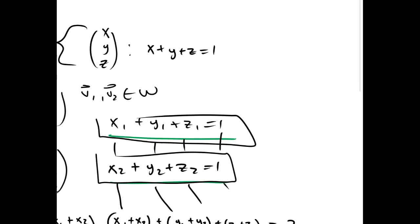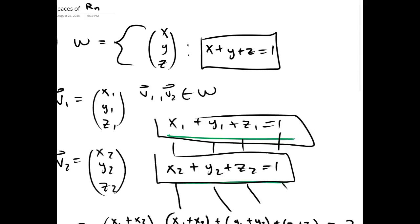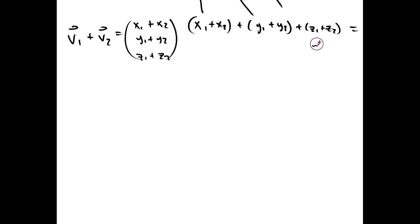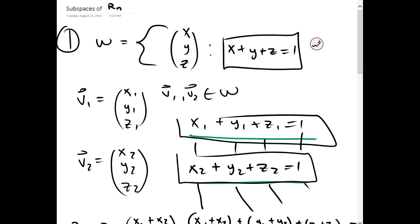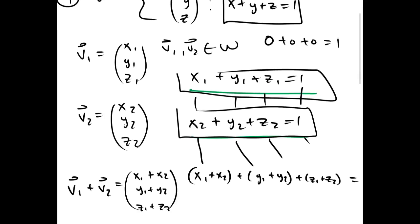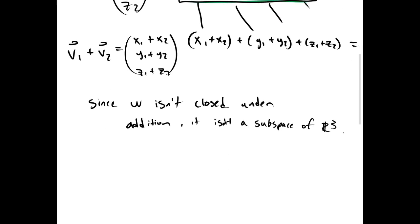Since the components add up to 2, V1 plus V2 is not in W. Since W isn't closed under addition, it isn't a subspace of R^3. An easy way to do this would have been just to check if the zero vector is inside this subset, and we'd easily see that it isn't, because 0 plus 0 plus 0 isn't equal to 1. But I showed you this other method to give you an idea of how to do some other problems.